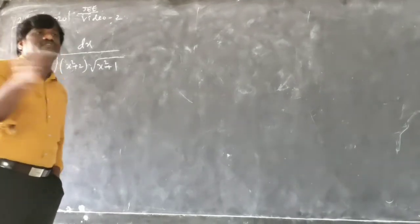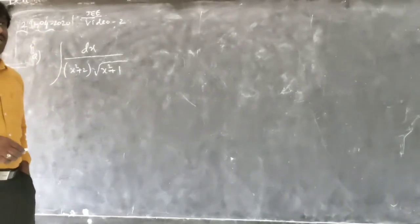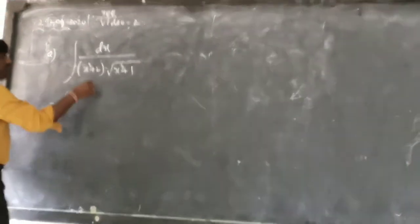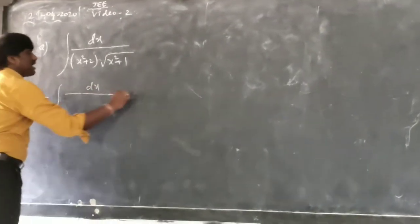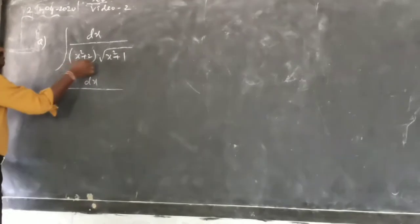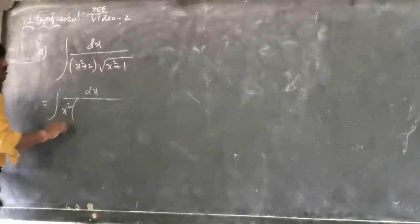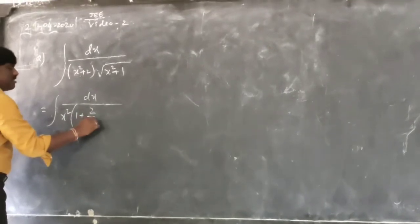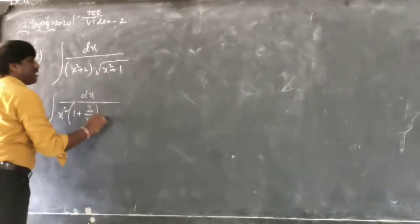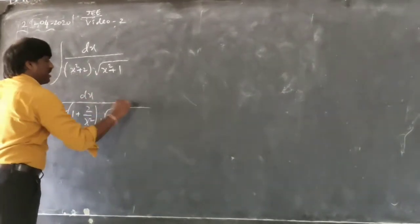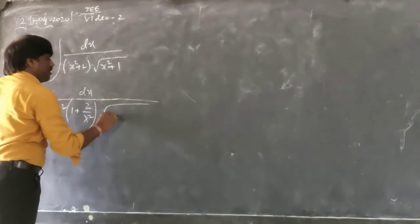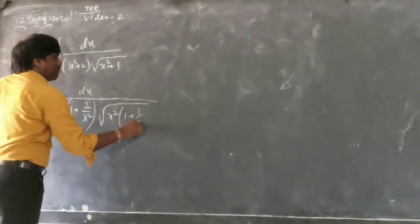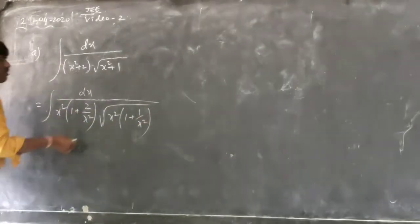Method one: take x² common from the numerator. So from x² + 2, taking x² common gives 1 + 2/x². Similarly, take x² common from the denominator under the root to get 1 + 1/x². That's what you get here — this is the beauty of the question.